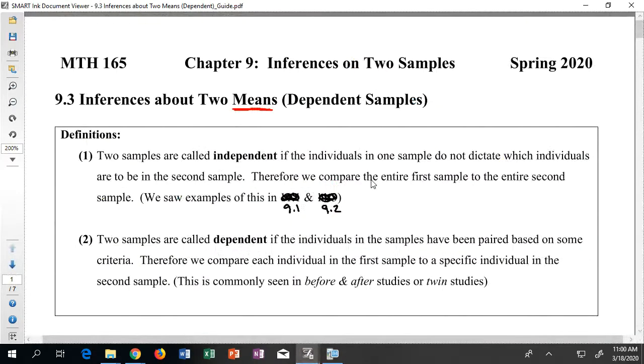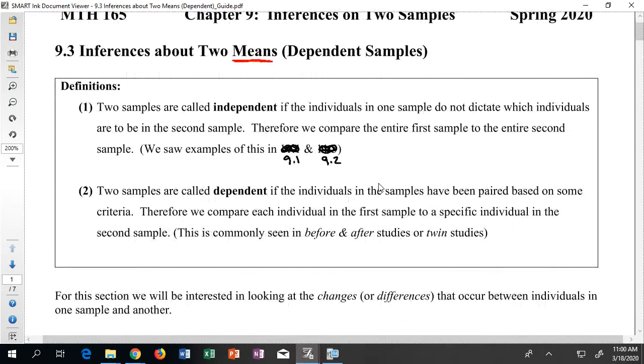If we take a look at the definitions on the first page, we'll see that two samples are called independent, like they were in the last couple sections, although we didn't use that verbiage. If individuals in one sample do not dictate which individuals are in the second sample, then when we have independent samples, we compare the entire first sample to the entire second sample.